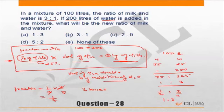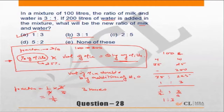Also notice: why is the reverse choice there? So that if you calculate water to milk, you might mark that instead. In such questions, always be careful — if the answer asked is water to milk, there will most probably be a choice for water to milk available. Both choices — water to milk and milk to water — will typically be available.